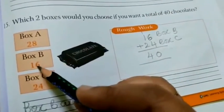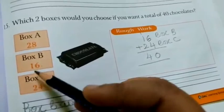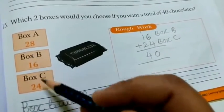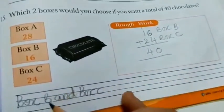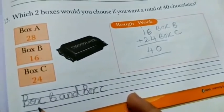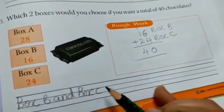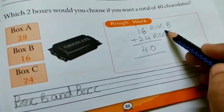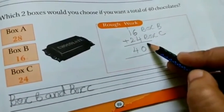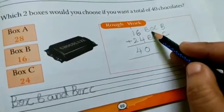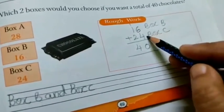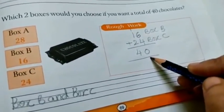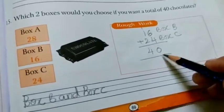So 6, 4, 10, 2 plus 1, 3 plus 1, 4. So if you add box B and box C, that is box B is equal to 16 and box C is equal to 24. When you add, you will get 40.